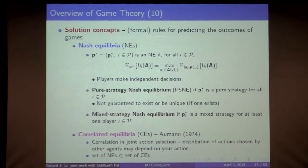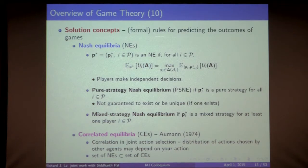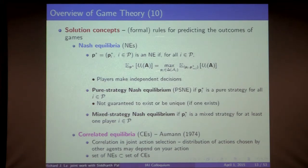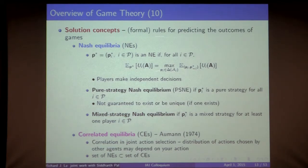Another equilibrium concept is the correlated equilibrium, proposed by Robert Aumann in 1974. Unlike Nash Equilibrium where players make independent choices, in correlated equilibria the distribution used to select actions can depend on what other players are doing — there is correlation in the selection of actions. The set of Nash Equilibria is always a subset of the set of correlated equilibria, so correlated equilibria extends the set of possible equilibrium points.